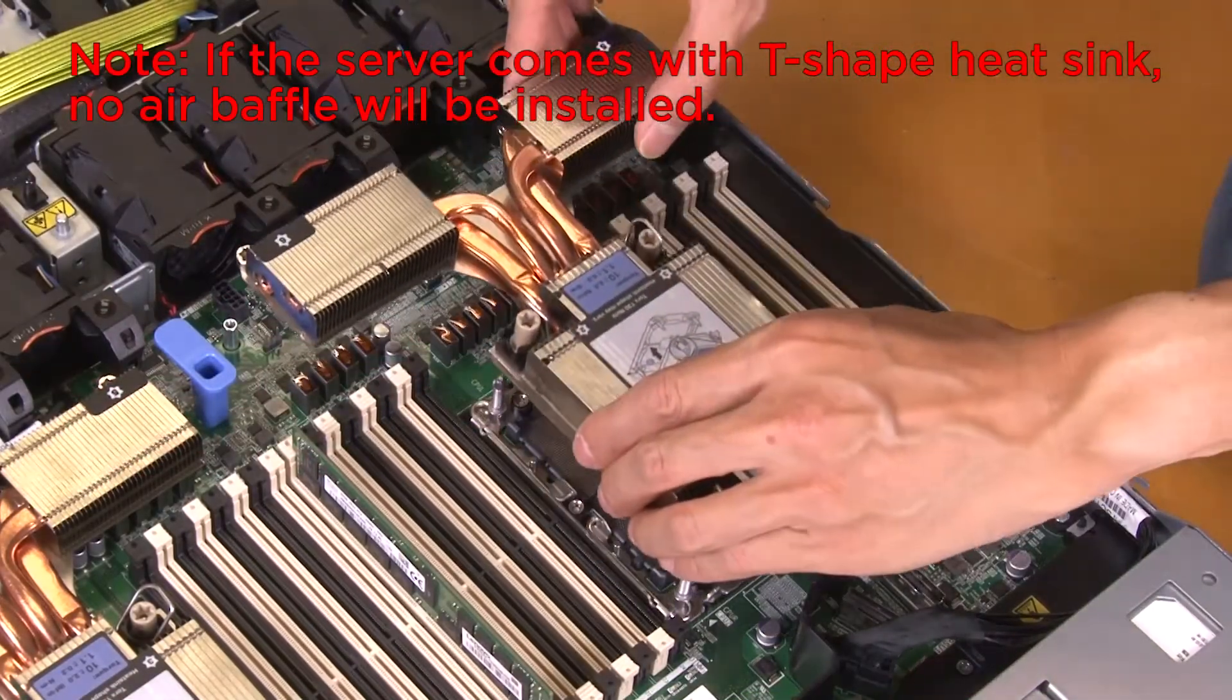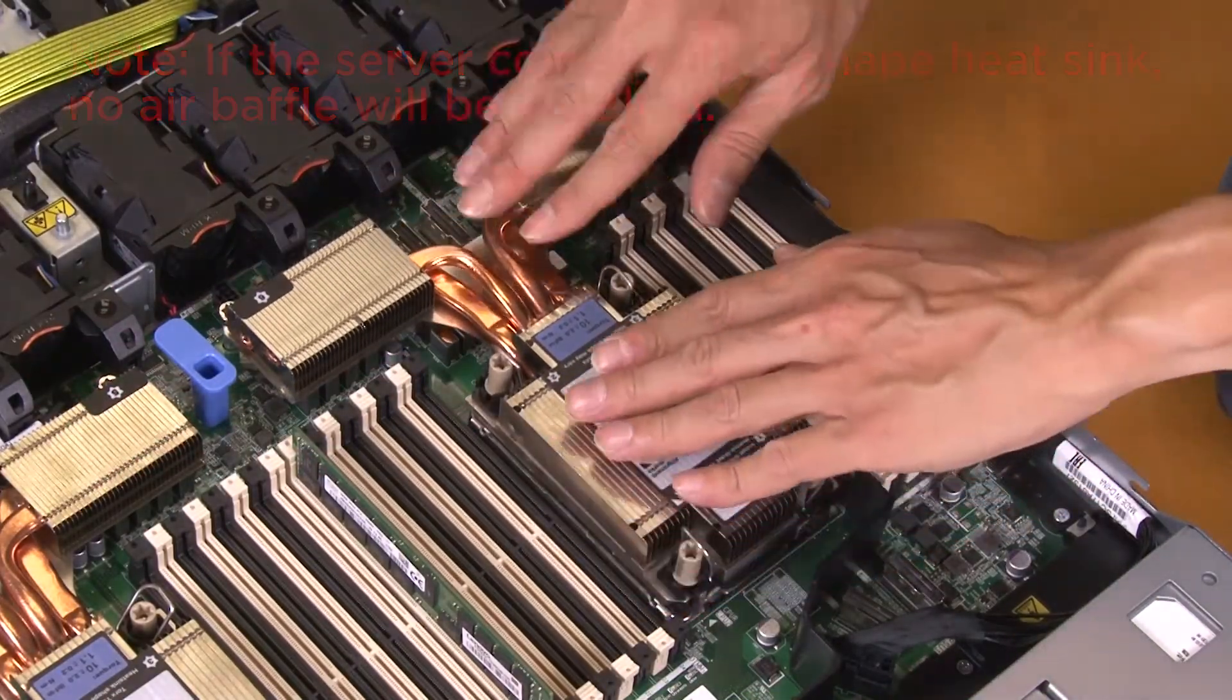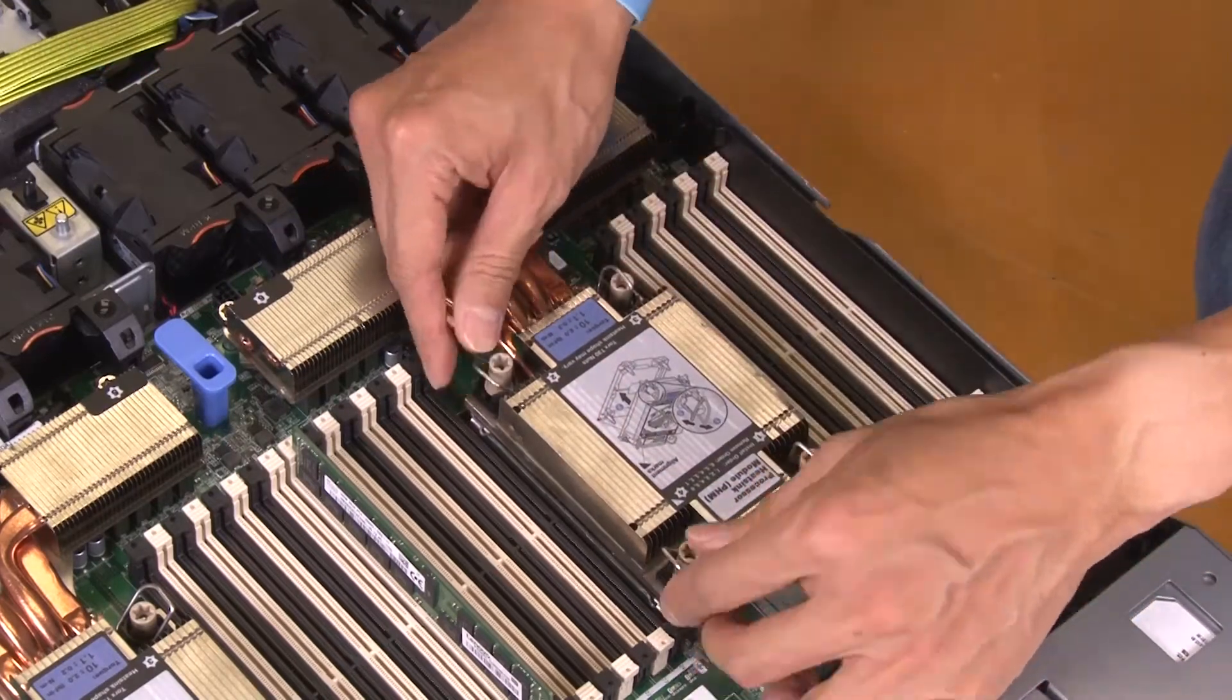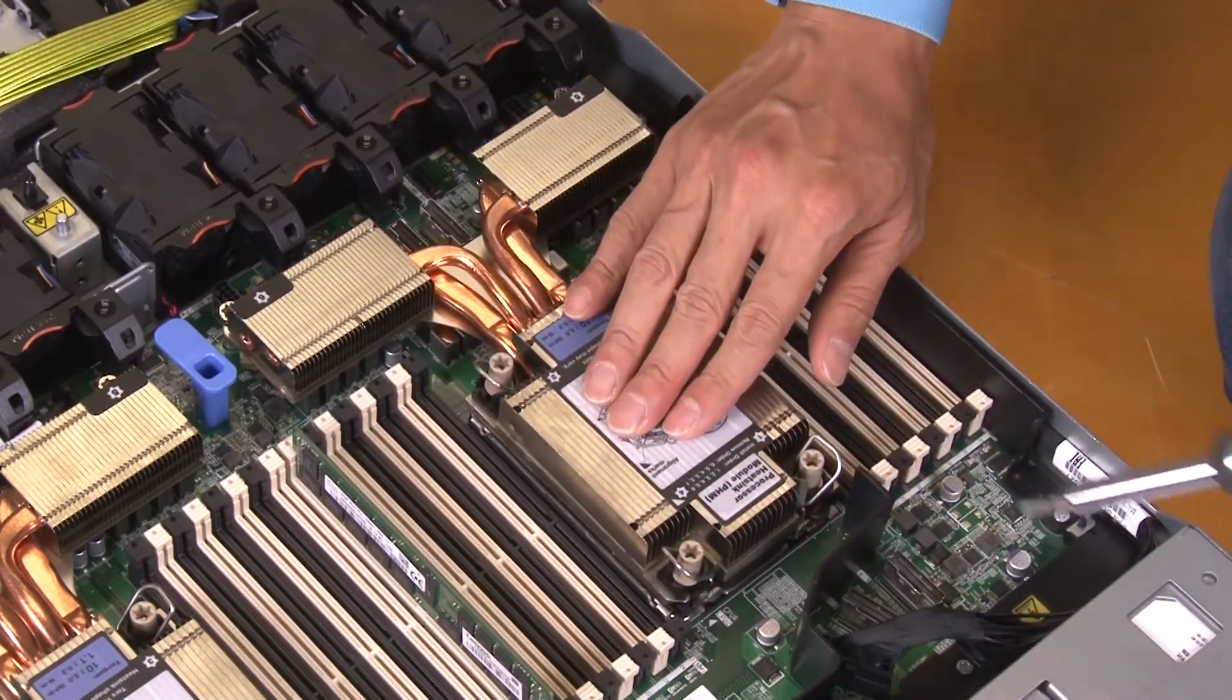Install the processor heatsink module into the system board socket. Push the anti-tilt wire bales inward.